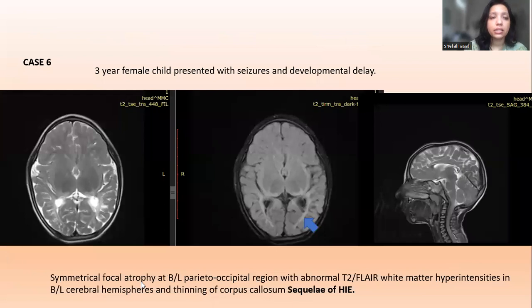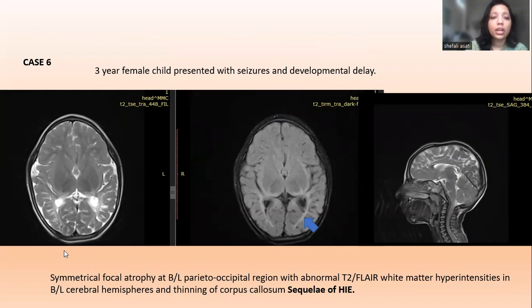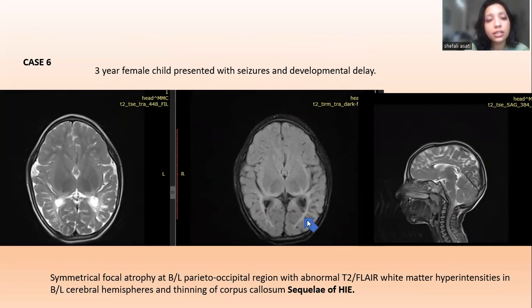Case 6: A three-year-old female child presented with global developmental delay. On T2-weighted FLAIR and T2 sagittal sections, there is symmetrical focal atrophy of the bilateral parietal and occipital regions, abnormal T2-FLAIR hyperintensities in the bilateral cerebral hemispheres, and thinning of the corpus callosum — sequelae of hypoxic-ischemic encephalopathy (HIE).